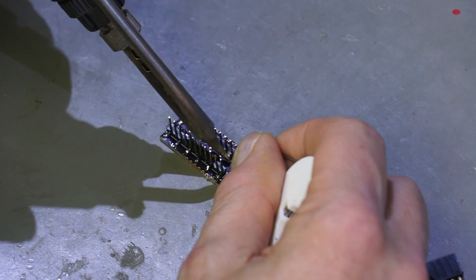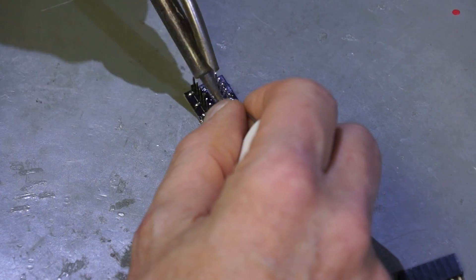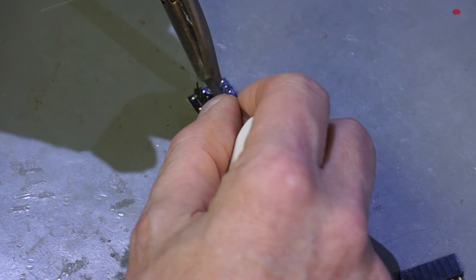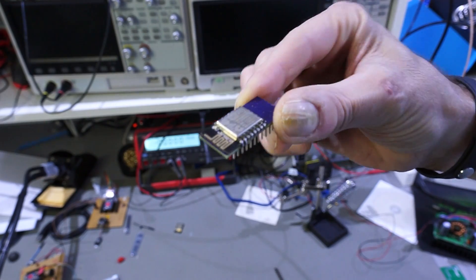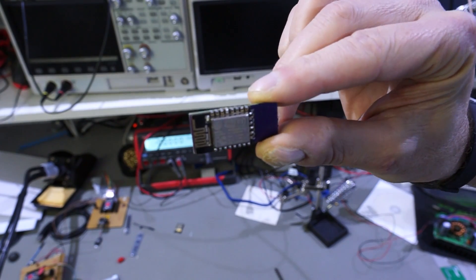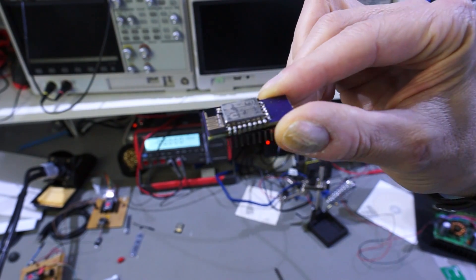Here you have to pay attention that the distance between the two rows are exact. Otherwise, it will not fit into the breadboard. The result is a very small module which fits extremely good into the breadboard.